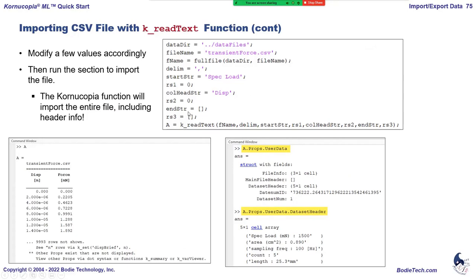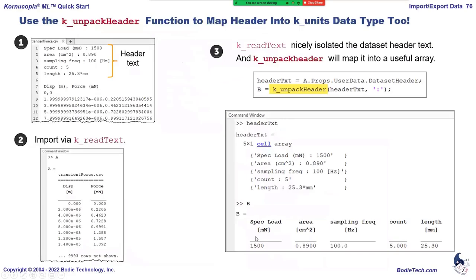We issue the command that reads it in, and in the user data it has the nice set of information we want. Continuing the example: this was our header data as it was read in. Now we isolate that header text and unpack it, turning messy raw header text into clean structured output.